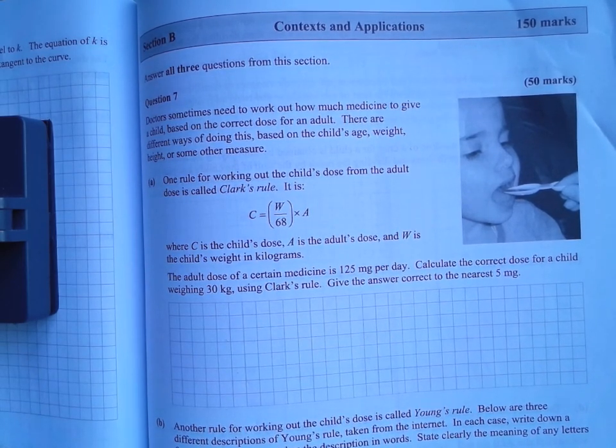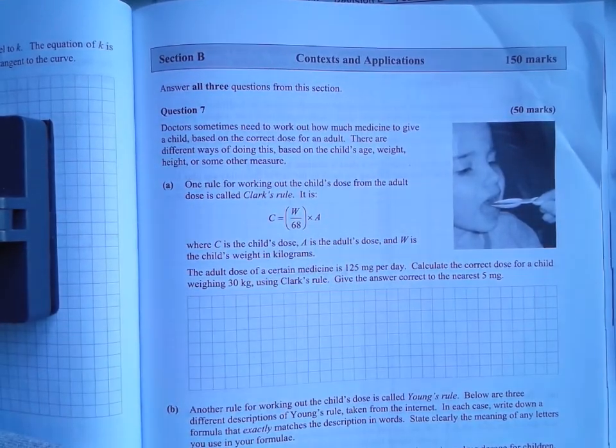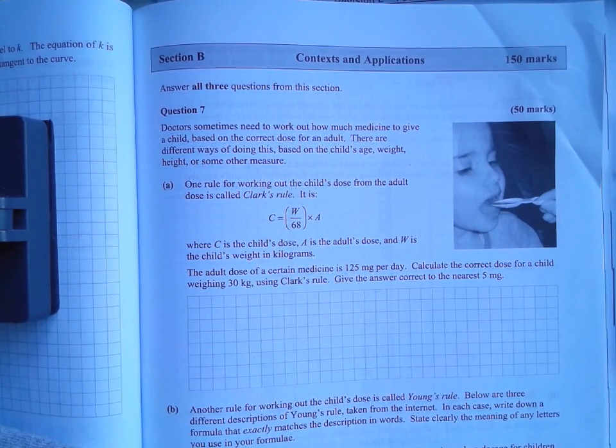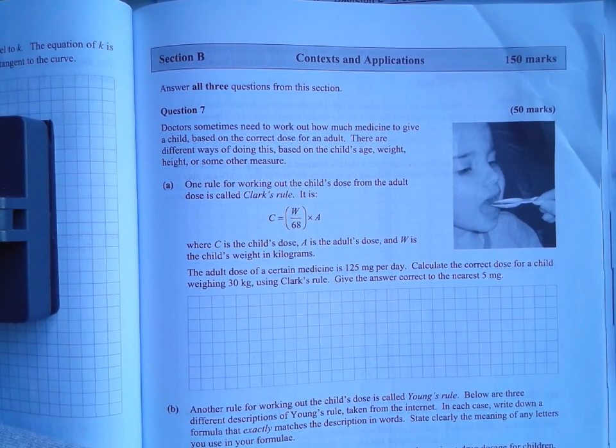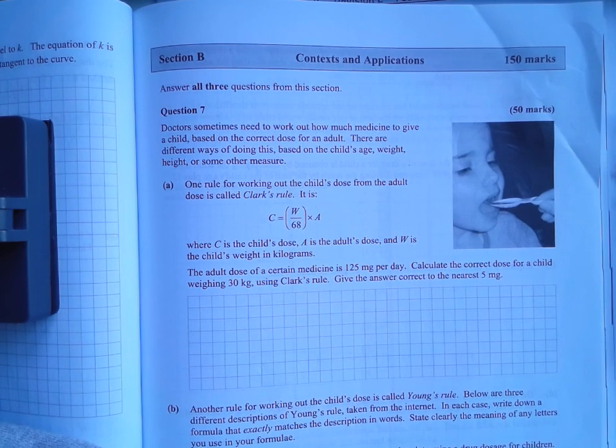So here we are. Doctors sometimes need to work out how much medicine to give a child based on the correct dose for an adult. There are different ways of doing this based on the child's age, weight, height, or some other measure. So basically they're saying they're going to give you a formula. You can see that there. And they're obviously giving you something to do with an adult, something to do with a child. There's a few variables—age, weight, height—involved, and let's see what happens.